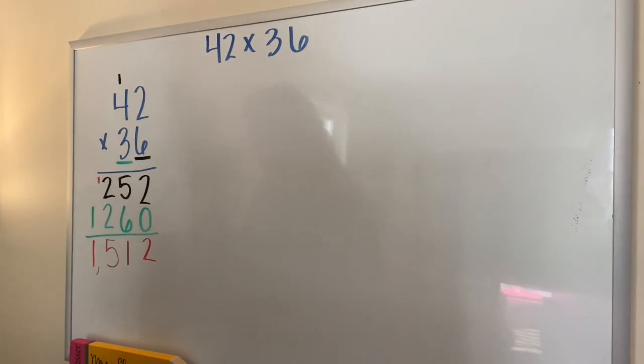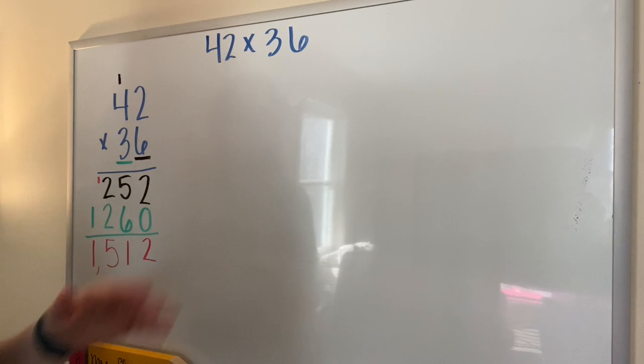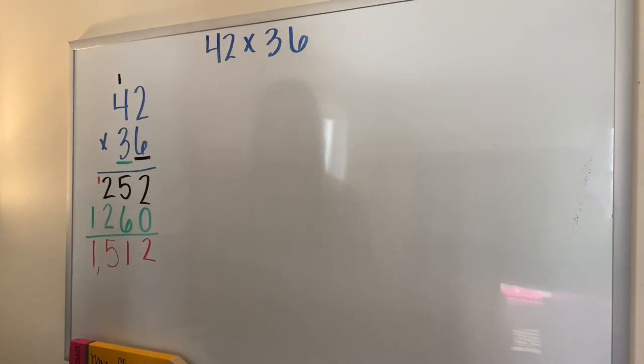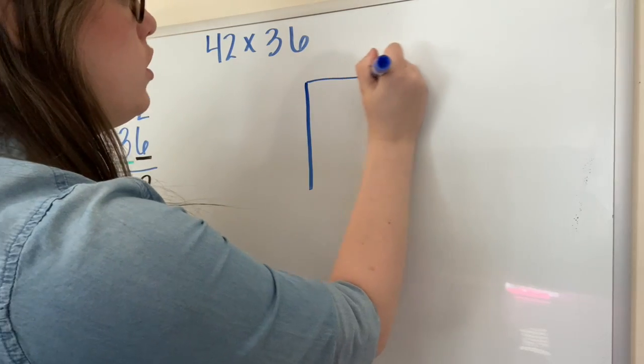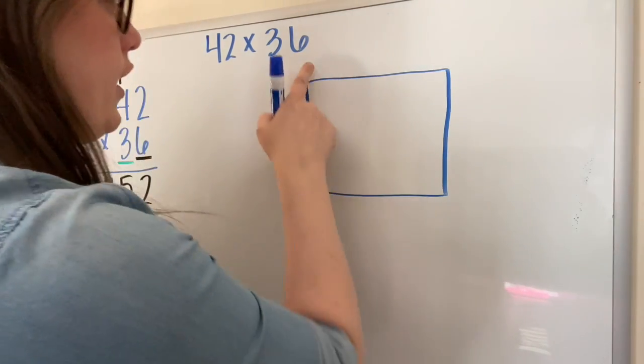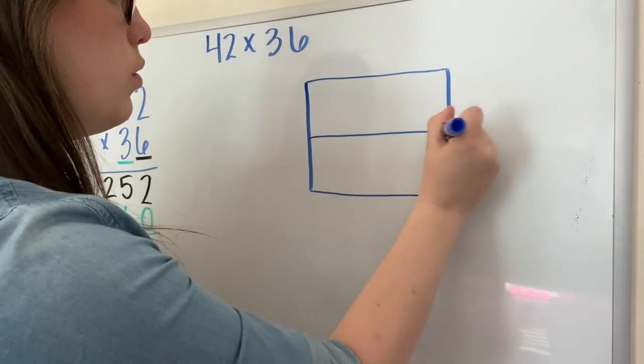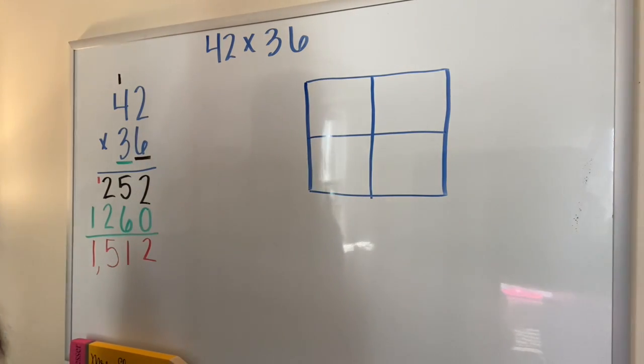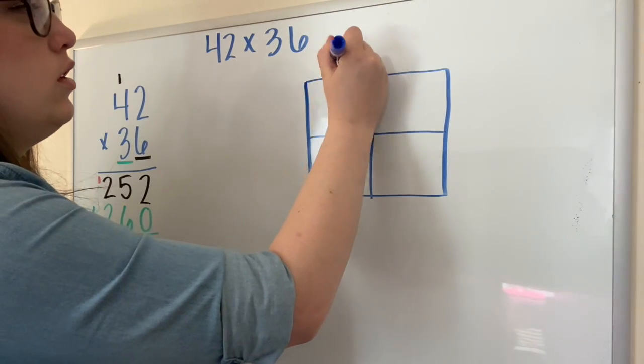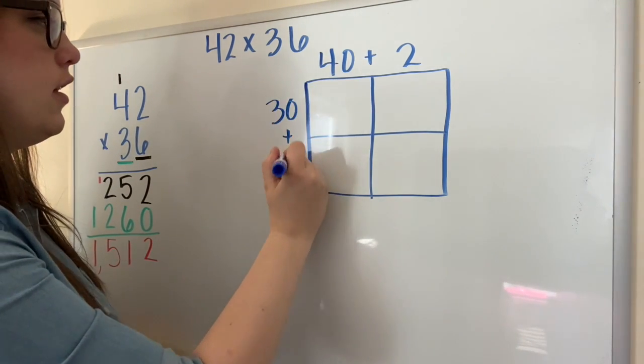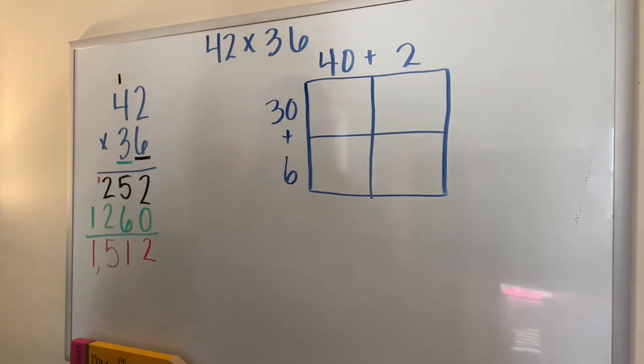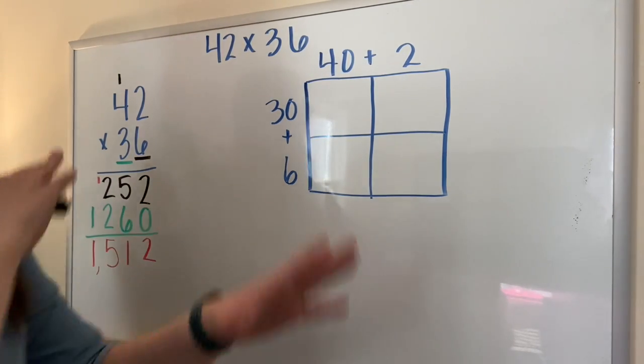Now I'm going to show you the box method of multiplication for two digit by two digit numbers. Very similar to the box method for two digit by one digit, there's just going to be a few more boxes. So again, I'm going to set up the problem using blue. Most important to make sure that you're setting up your problem correctly. With a two digit by two digit number, I need two boxes across, I need two boxes down. So I will have a total of four boxes here. And then I got to break down those numbers. 42 is 40 and 2. 36 is 30 and 6. And now I can start in on my step one, I've set up the whole problem.